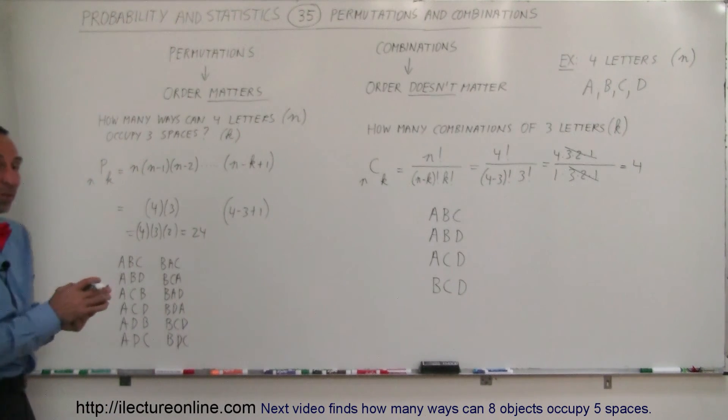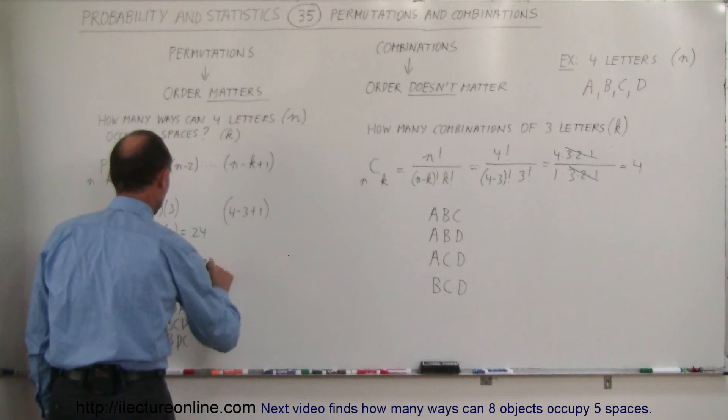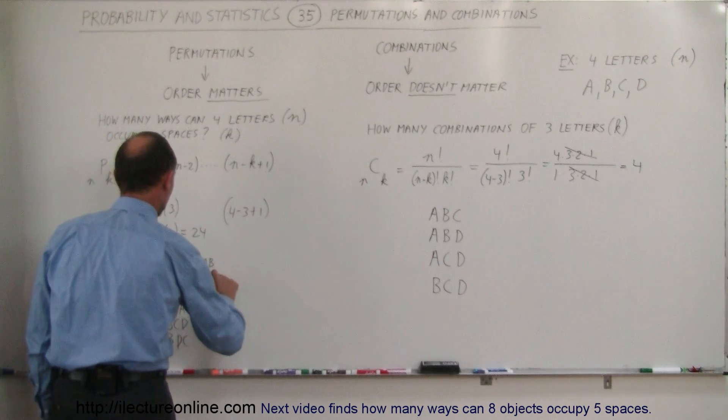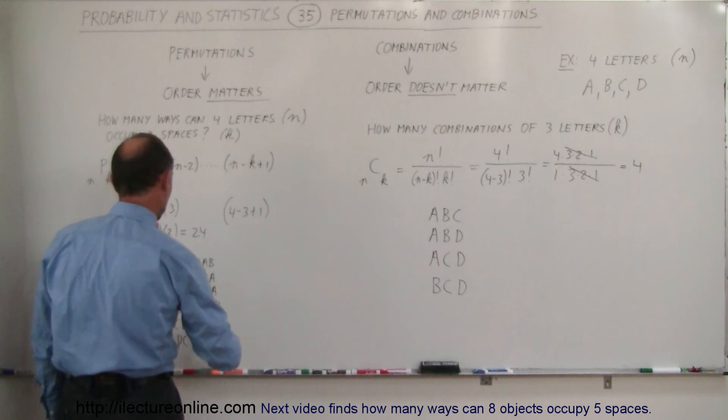Now we should have six more permutations with the letter C. So we have C, AB, C, BA, C, DA, C, AD, C, let's see, we can have D.